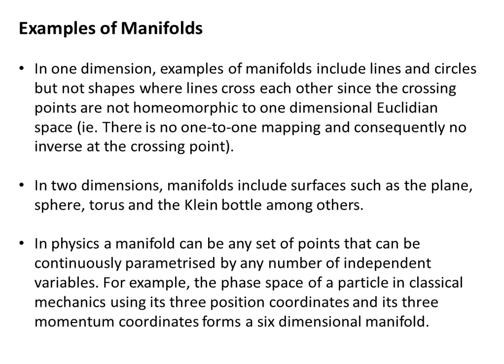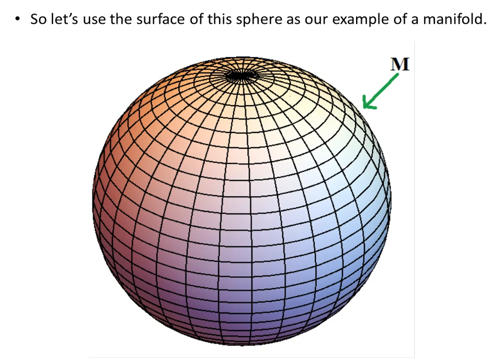Examples of manifolds in one dimension include lines and circles, but not shapes where lines cross each other, since the crossing points are not homeomorphic to one-dimensional Euclidean space — there is no one-to-one mapping and consequently no inverse at the crossing point. In two dimensions, manifolds include surfaces such as the plane, sphere, torus, and the Klein bottle, among others. In physics, a manifold can be any set of points that can be continuously parametrized by any number of independent variables — for example, the phase space of a particle in classical mechanics using its three position coordinates and three momentum coordinates forms a six-dimensional manifold.